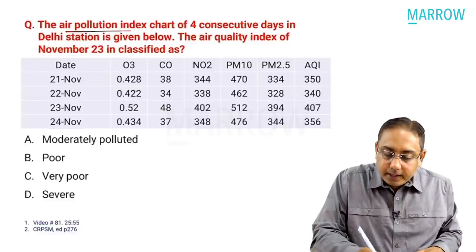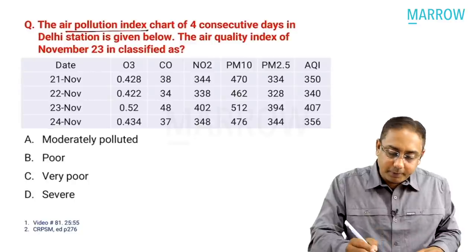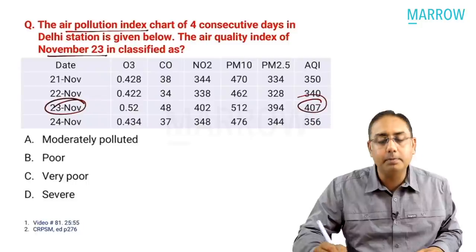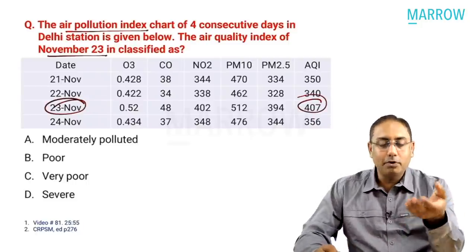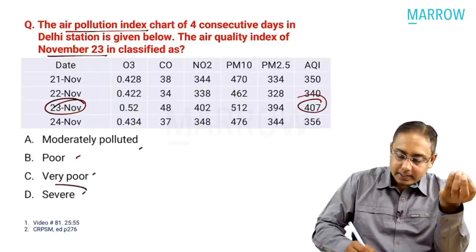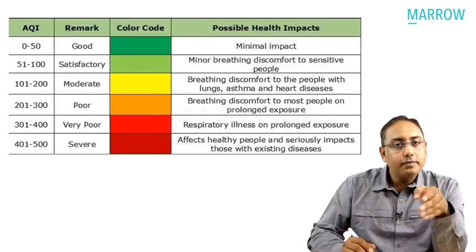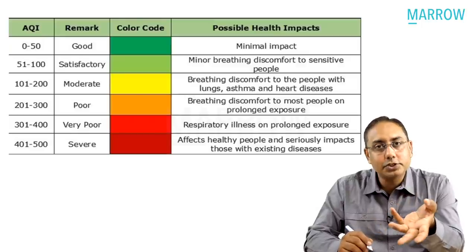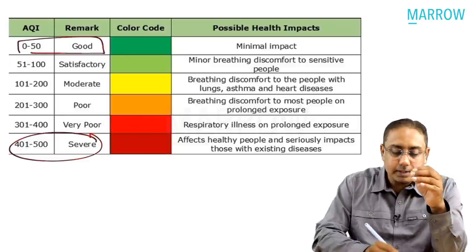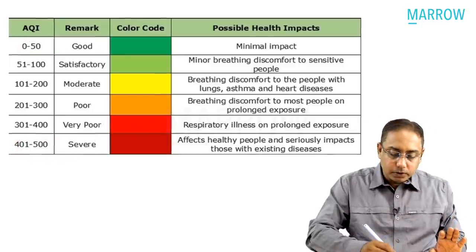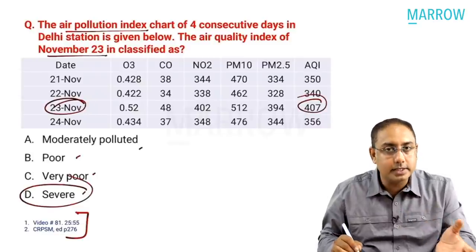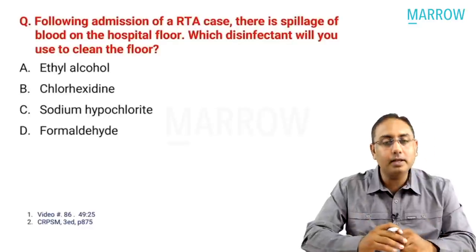Next MCQ: an air pollution index chart for four consecutive days from a Delhi station is given. The air quality index on November 23rd in Delhi is classified as? On November 23rd, the maximum AQI was shown. AQI categories: more than 400-500 is classified as severe air quality; less than 50 is good air quality. Based on the chart showing the highest value, the answer is severe air quality index. For more on air quality indices, see video number 81 and CRPSM page 276.